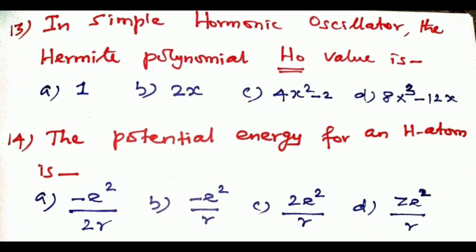Question number fourteen: the potential energy for a hydrogen atom is dash. The formula is option b: −e²/r. So minus e squared divided by r is the potential energy for the hydrogen atom.